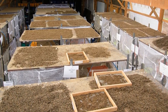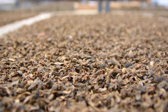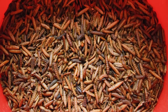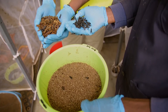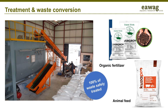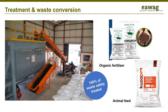Two tried and tested waste conversion processes transform the feces into an organic fertilizer and a protein-rich animal feed. The fertilizer is successfully marketed under the brand name Evergrow and is popular with the Kenyan flower industry. The protein-rich animal feed using black soldier fly larvae is marketed as Kusapro, providing a quality alternative to existing animal feed in Kenya. Sanergy's impact to date includes over 95,000 users and 10,000 tons of waste treated annually in the two informal settlements of Mukuru and Makadara.